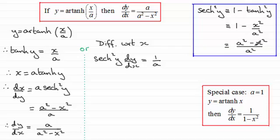Now we can see that sech squared y is a squared minus x squared over a squared. So we can substitute that in there. So we have a squared minus x squared, all divided by a squared, multiplied with dy by dx, and that equals 1 divided by a.